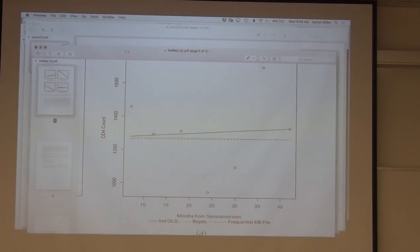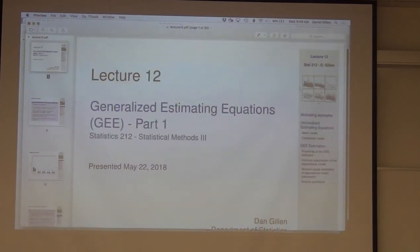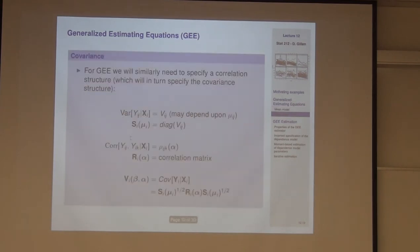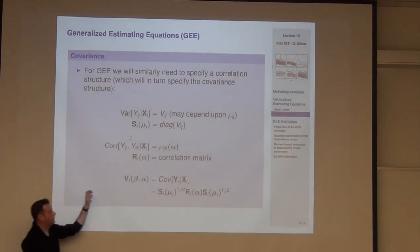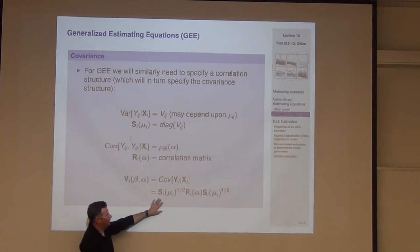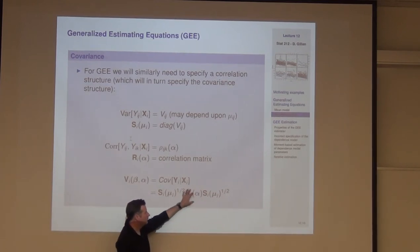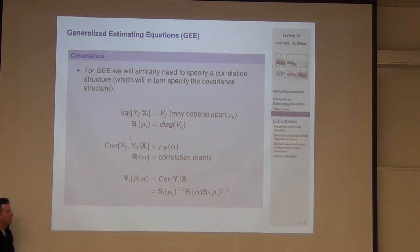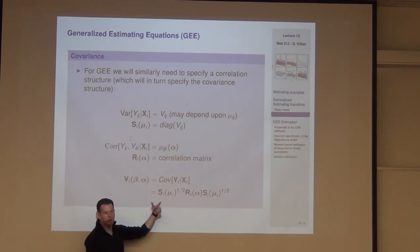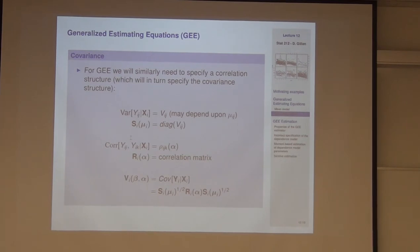Let's go back to lecture 12 to finish it up. I'm moving fairly quickly through this because it's really the same things we've seen — the only difference now is I'm taking the GLM framework, thinking about the variance of the response, decomposing it to assume some correlation structure between observations on the same cluster, and adding a mean-variance relationship down the diagonal for discrete responses.